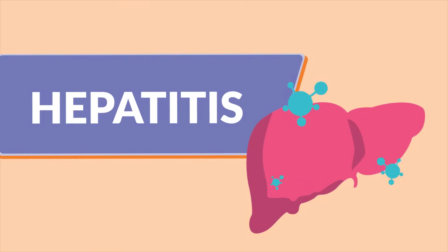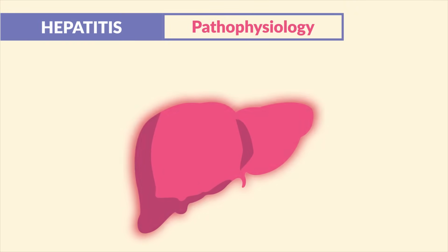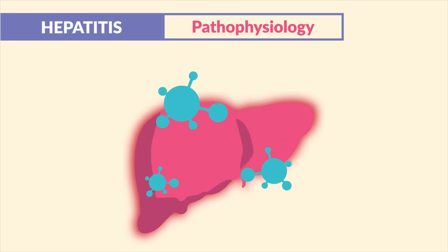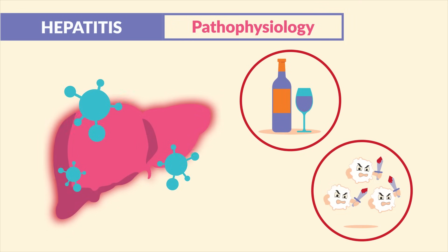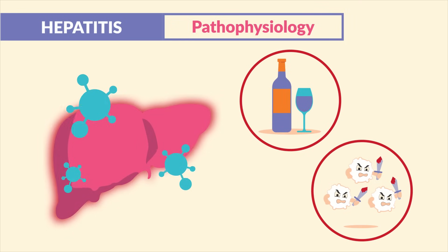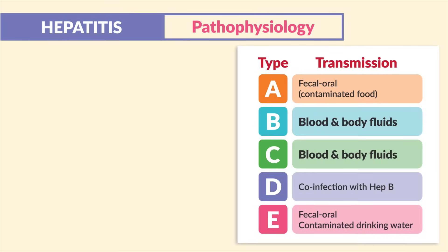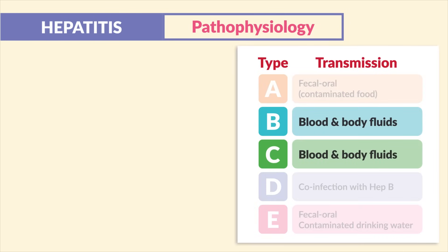Hepatitis refers to inflammation of the liver, commonly caused by a viral infection. Non-viral causes include alcohol and autoimmune diseases where the body attacks itself. There are five different types of hepatitis: A, B, C, D, and E. The most tested on exams are B and C.